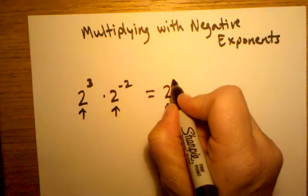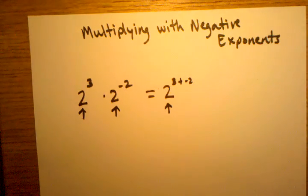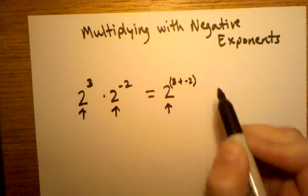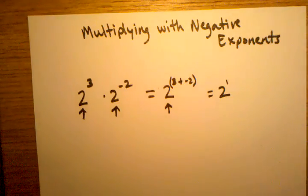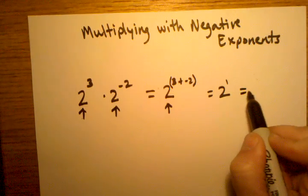In this case, when we're adding, we're just going to be adding with a negative number. So that would be the same thing as 3 plus negative 2, which equals 2 to the first power, which we know will just equal 2.